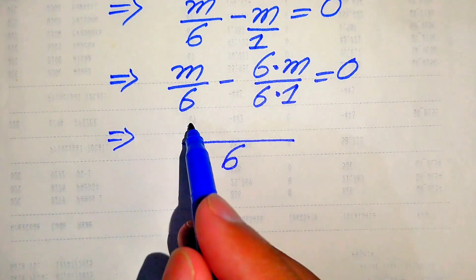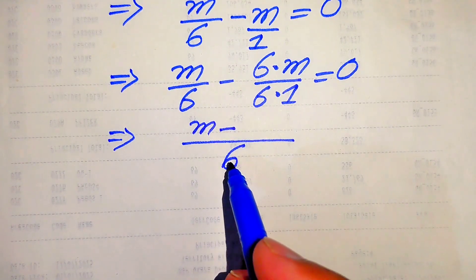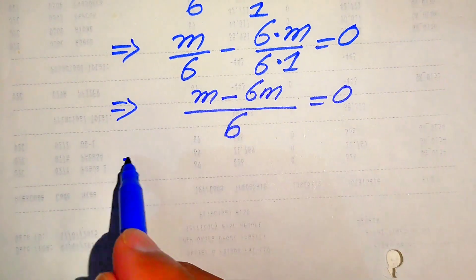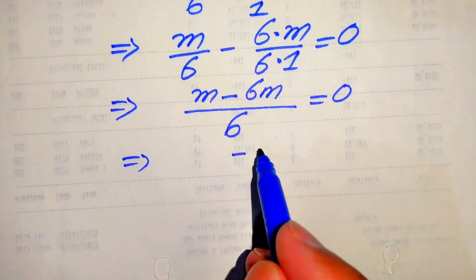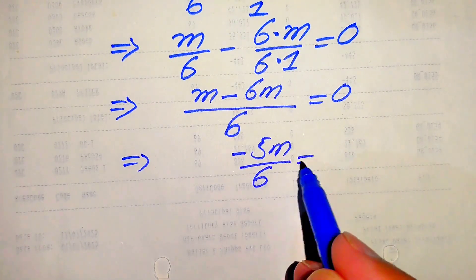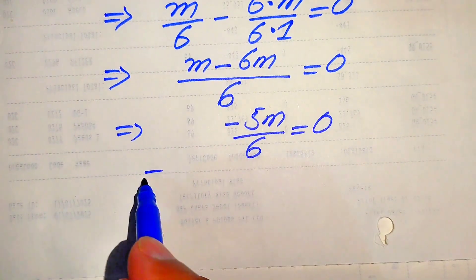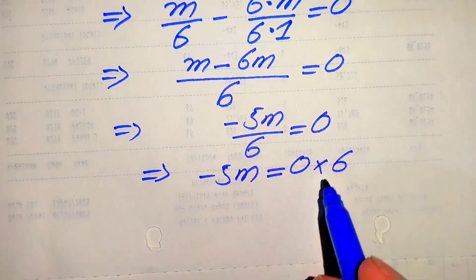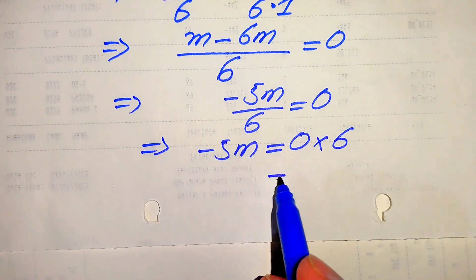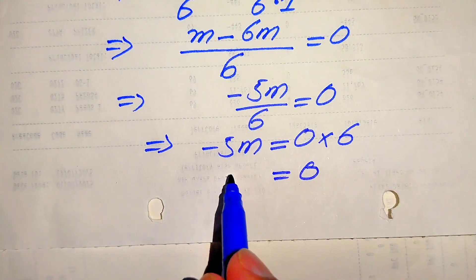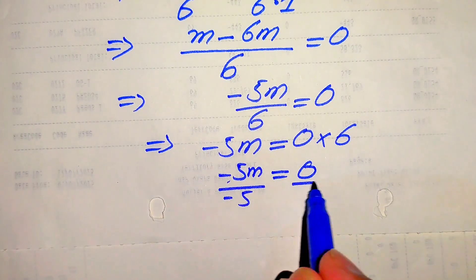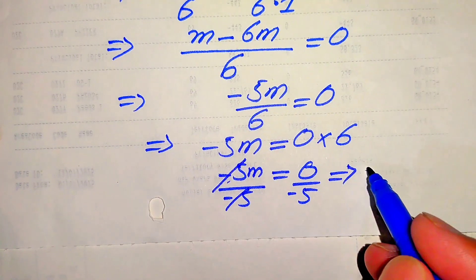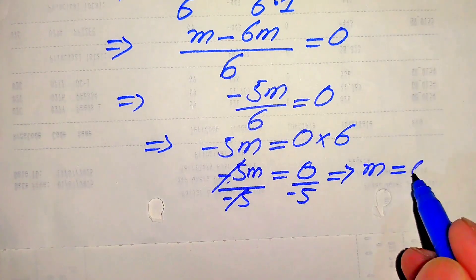You see here this 6 cancels with this 6, and we get m minus 6m, where this 6 also cancels with this 6, giving 6m. So m minus 6m equals minus 5m divided by 6, and this whole equation equals 0. We move the 6 to the right hand side, giving minus 5m equals 0 multiplied by 6. Since 0 times 6 equals 0, we divide both sides by minus 5, and you see here minus 5 cancels, so m equals 0 over minus 5, which equals 0.